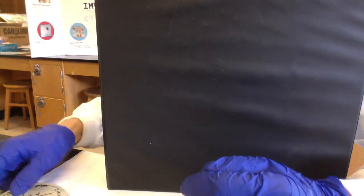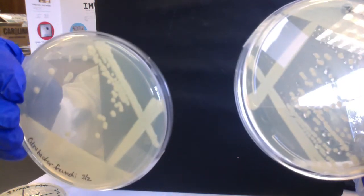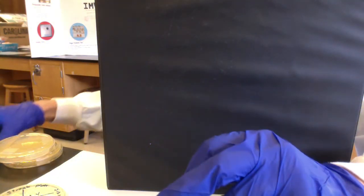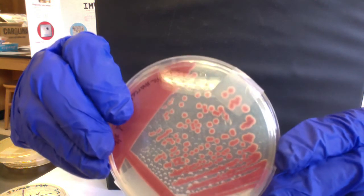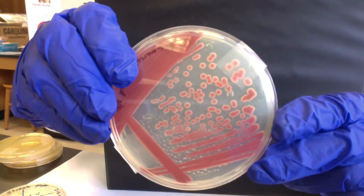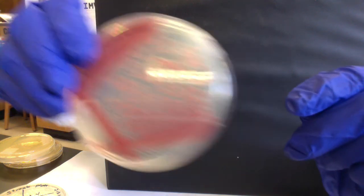I want to show you some prettier plates done by Valerie and Carmen. These are beautiful streak plates with beautiful isolated colonies. Serratia marcescens has this beautiful red pigment. Just examples of beautiful streak plates with well-isolated colonies.